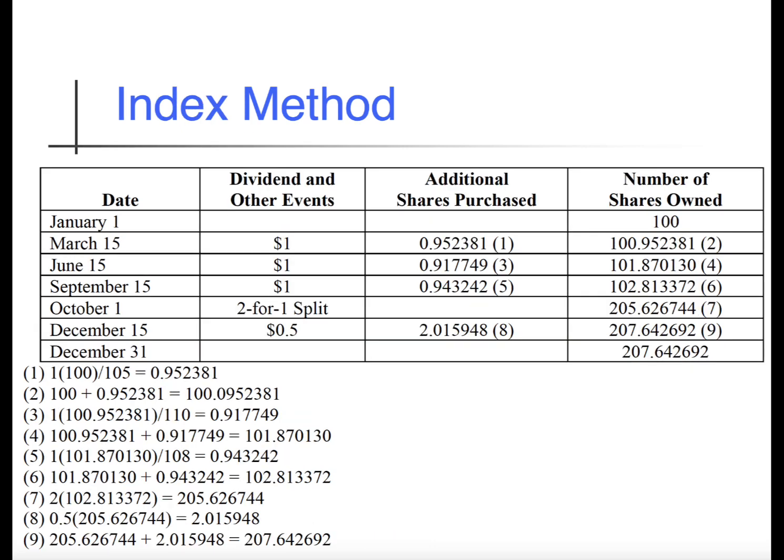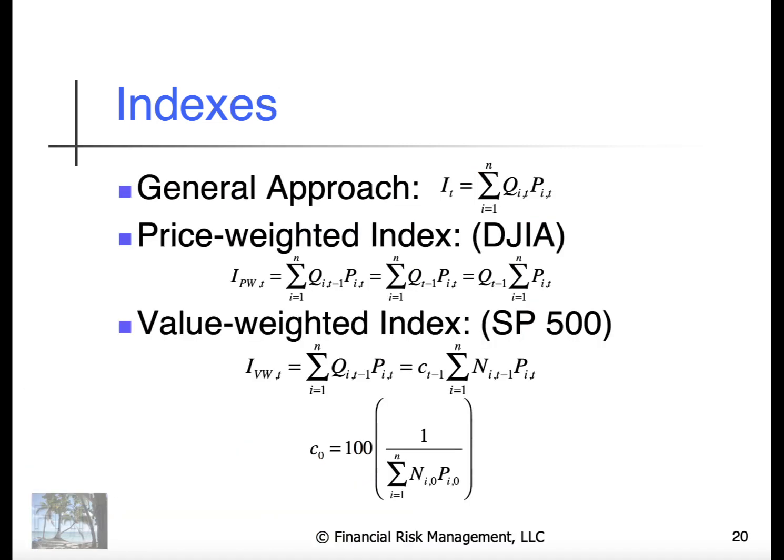There's an index method where basically you just assume that you buy additional shares when you get the dividend. You keep track of things like two-for-one splits. When you calculate the rates of return, you get exactly the same result.